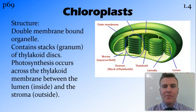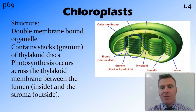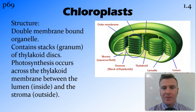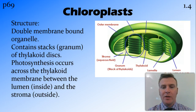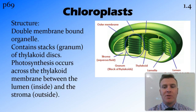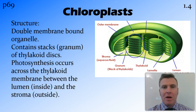Their structure is very important. They're double membrane-bound organelles, so we have the inner membrane and the outer membrane. Inside the inner membrane we have these discs called thylakoids. A thylakoid has inside it the lumen and outside of it the stroma, and photosynthesis happens on this membrane between those two, so between the stroma and the lumen. These thylakoid discs are stacked up into stacks called granum, and the granum are surrounded by that double membrane.